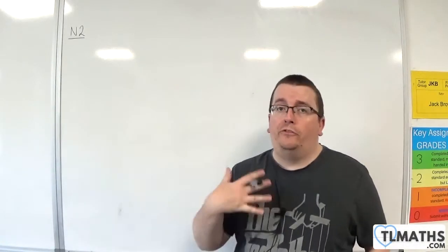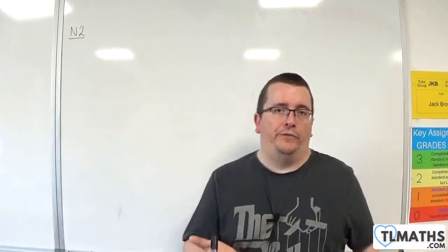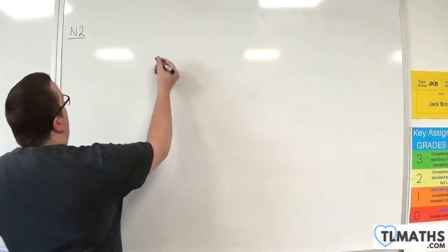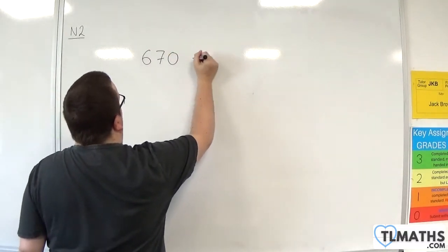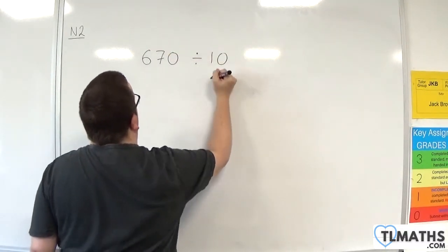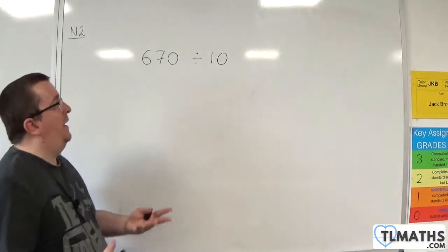Dividing by powers of 10 is a very similar process to multiplying by powers of 10. If you had something like 670 and you wanted to divide that by 10, you could just consider this as